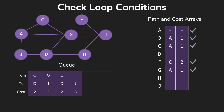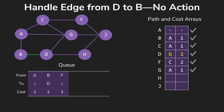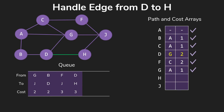We check our loop conditions and handle the first item in the queue, which gets us to D — that's new for us. We update our arrays and start checking edges out of D. We don't do anything about B or G, but we do add H at cost 3, because the total cost to get to D was 2, and we add 1 to that to get 3.